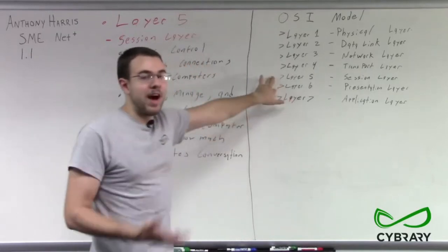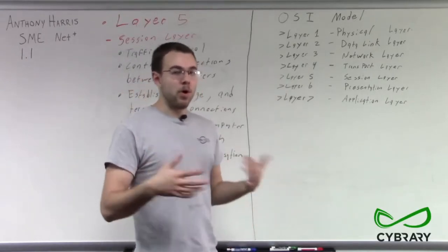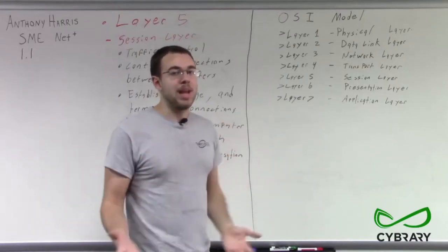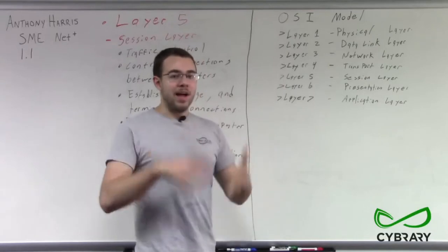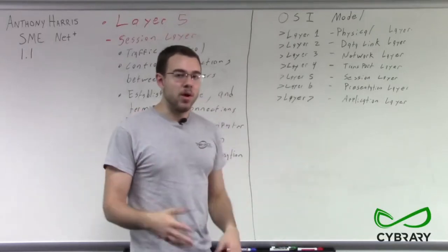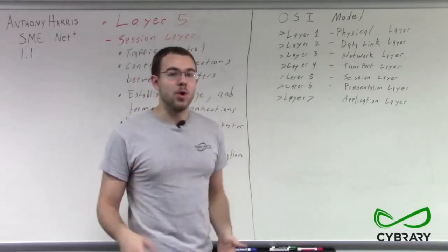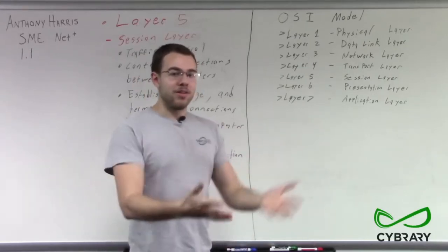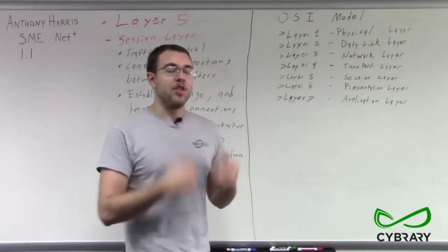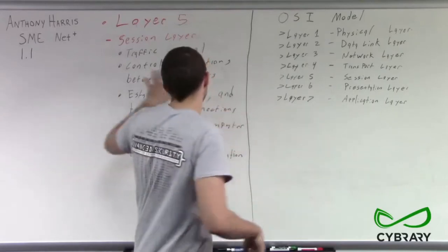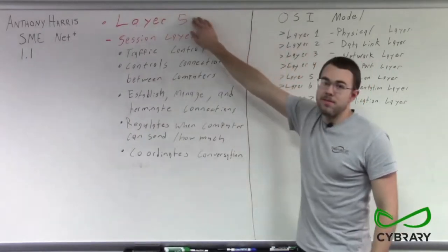That's our Layer 5. Our session layer is where we create and establish a connection, perform our handshake with the other computer, and when we're done talking, we terminate our connection. Think of it like an assembly line — we need a shipping manager to coordinate when to start sending packets, confirm the address is correct, and tell us what to do. In our OSI model, that coordinating function belongs to Layer 5.